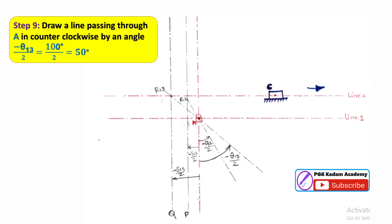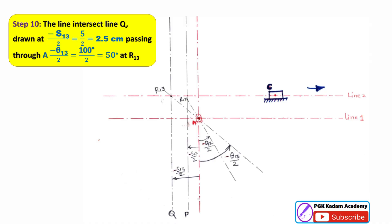Step 9: For position 3, similarly draw a line passing through A in the counterclockwise direction at an angle of minus θ₁₃/2 equal to 100/2 equal to 50 degrees. Step 10: This line intersects the second vertical line Q, which is at a distance of minus S₁₃/2 equal to 2.5 cm, intersecting at point R13. This is the second relative pole between the first and third positions.